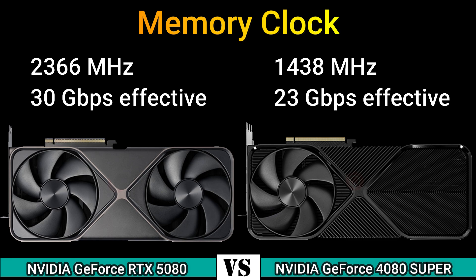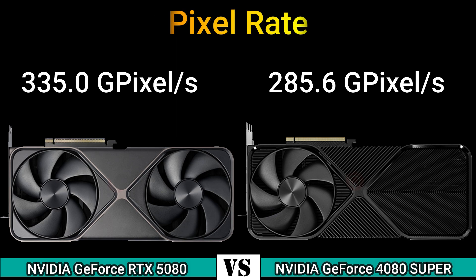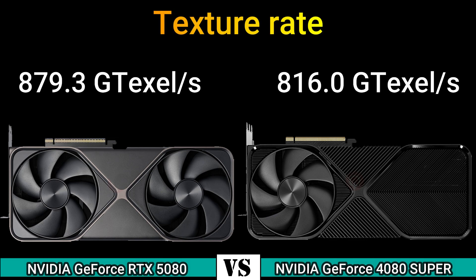Memory clock 2366 MHz, 30 GB/s effective, and 1438 MHz, 23 GB/s effective. Pixel rate: 335.0 gigapixels/s and 285.6 gigapixels/s. Texture rate: 879.3 GT/s and 816.0 GT/s.